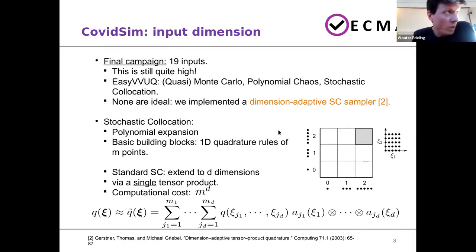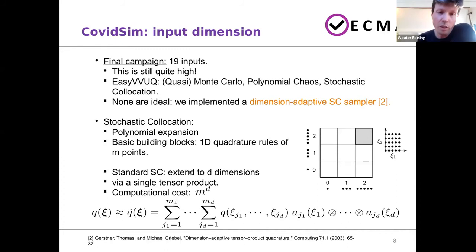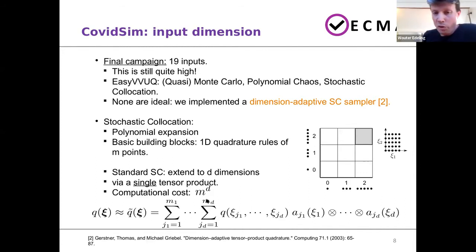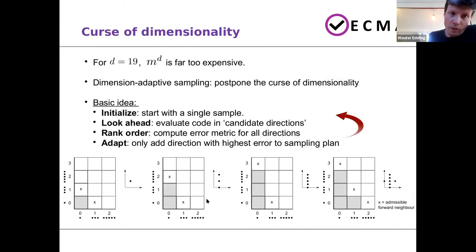Stochastic collocation has certain advantages — it can converge very quickly under certain conditions. But the computational cost is exponential because of the tensor product. In 2D this is not an issue, but in 19 dimensions — for instance 5 to the power of 19 — it will be way too expensive.